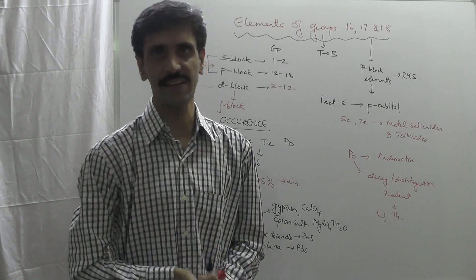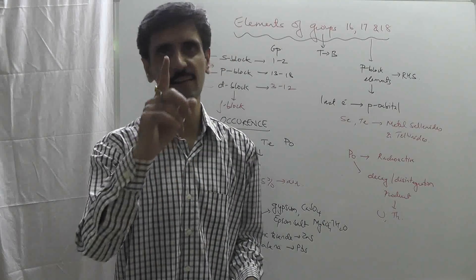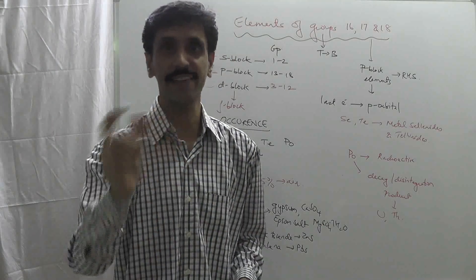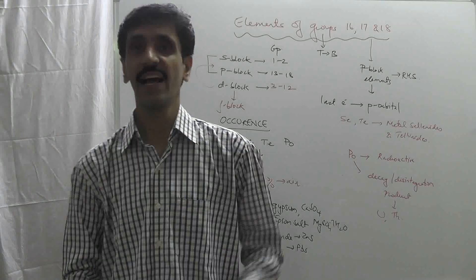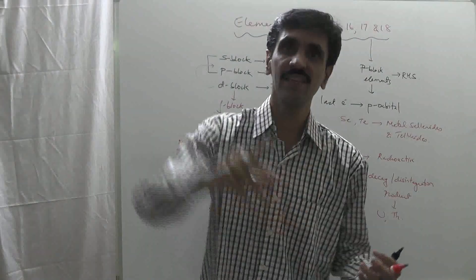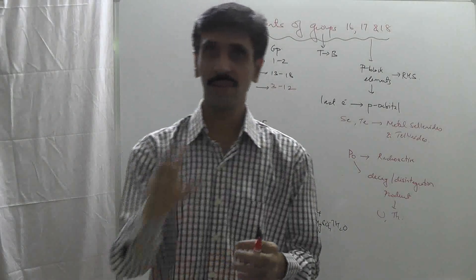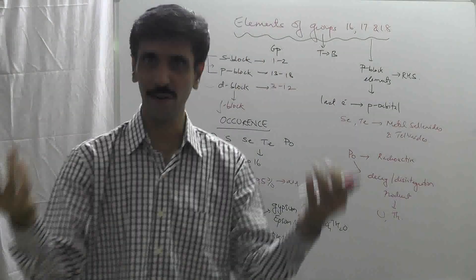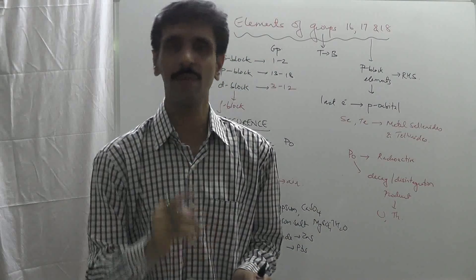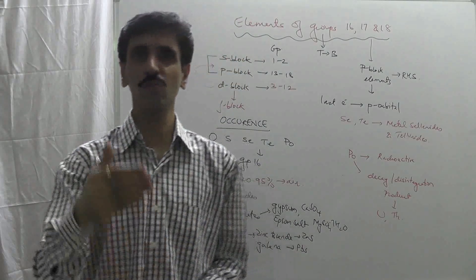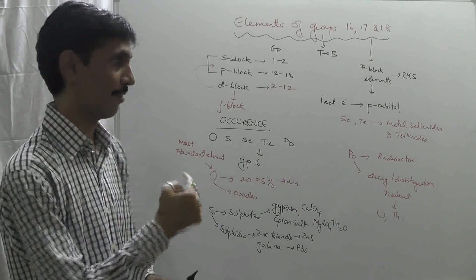Polonium also has radioactivity to a certain extent. Radioactivity is a form of high-energy radiation, meaning the element has high energy and therefore low stability. When we compare polonium's stability with the other elements of group 16 — oxygen, sulfur, selenium, and tellurium — its stability is less because of its radioactive nature. This was the occurrence with respect to group 16.